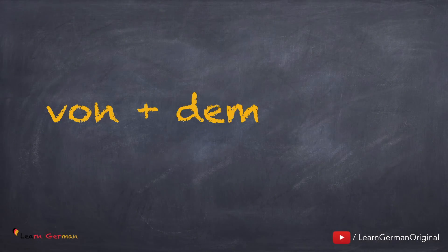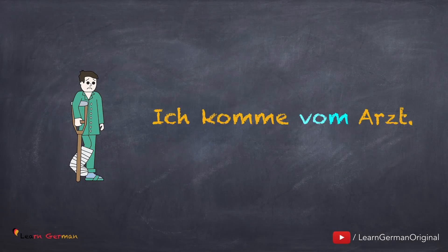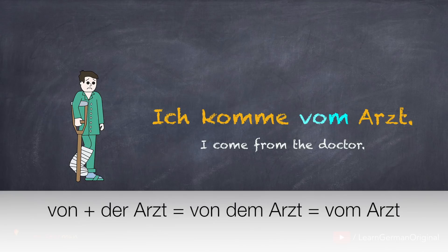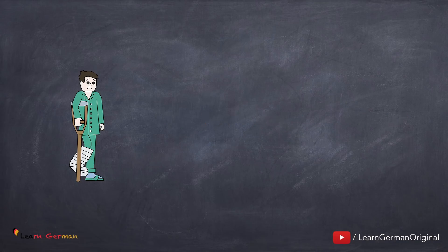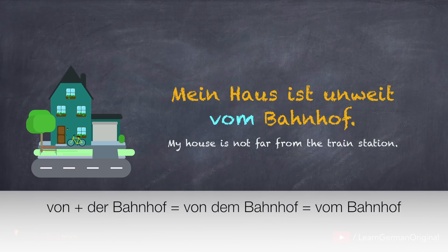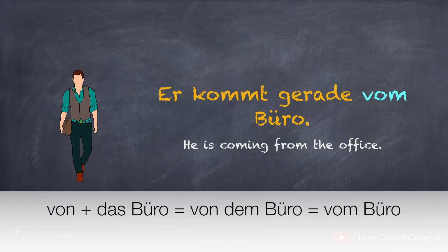The article DER or DAS changes to DEM in Dativ. When this comes together with VON, you would use VOM. This is only possible when you are using a definite article. For example: 'Ich komme vom Arzt.' DER Arzt changes to DEM Arzt — VON and DEM together give you VOM. Another example: 'Mein Haus ist unweit vom Bahnhof.' Here also DER Bahnhof changes to DEM Bahnhof. And with the article DAS: 'Er kommt gerade vom Büro.' DAS Büro changes to DEM Büro — VON and DEM together give you VOM Büro.